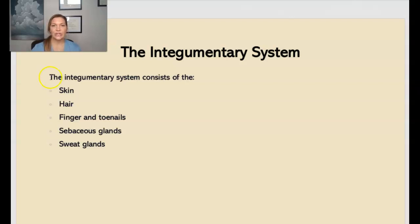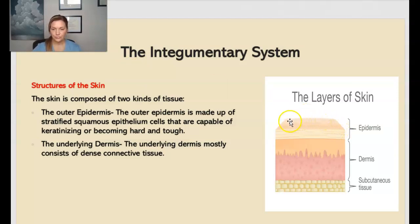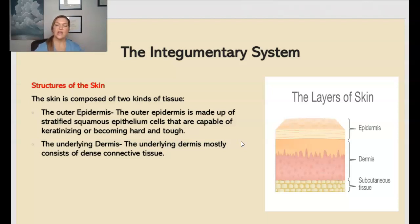The integumentary system includes, of course, our skin, our hair, our fingernails, our toenails, the sebaceous glands, and our sweat glands. The skin is composed of two kinds of tissue: the outer epidermis and then the underlying dermis. Underneath the epidermis we have the dermis, which mostly consists of dense connective tissue. Then underneath the dermis, we have the subcutaneous tissue which is mostly fat.